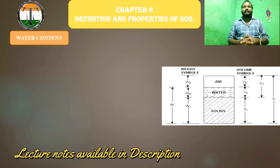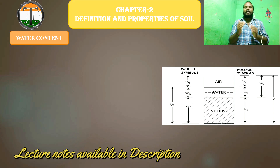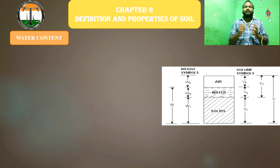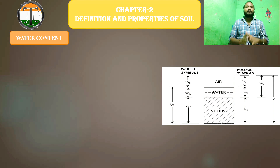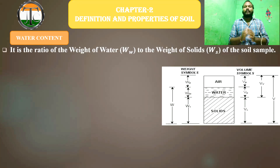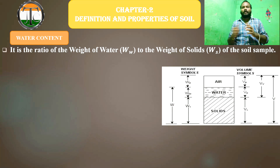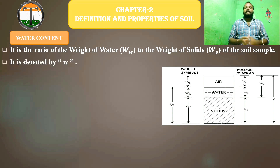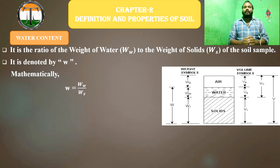Water content is among the index properties. So what is water content? Water content means just a proportion or comparison between the water and the solid — weight-wise comparison between water and solid. So water content is defined as the ratio between the weight of water to the weight of solid of the soil sample. So w is equal to weight of water divided by weight of solid.